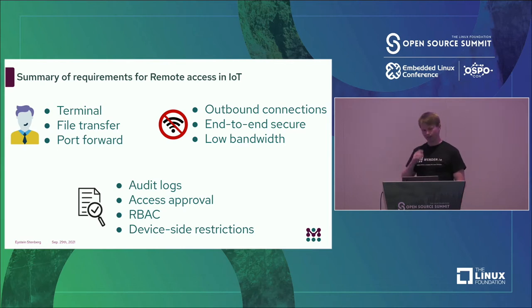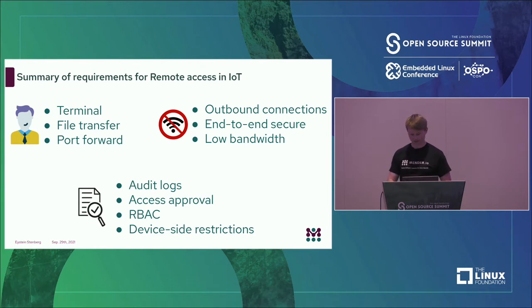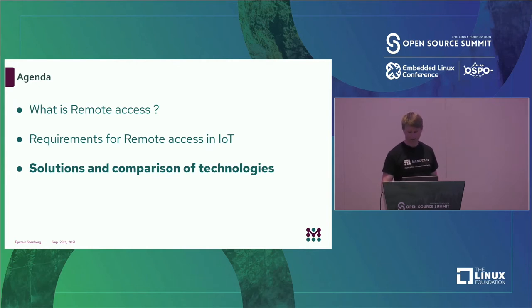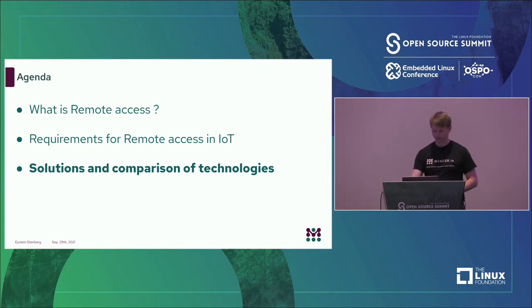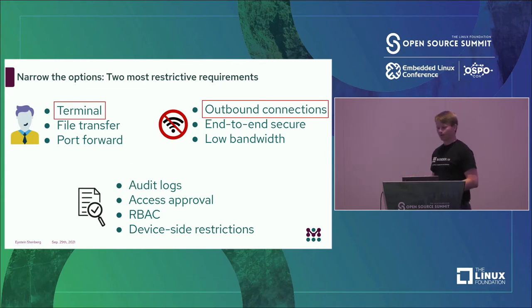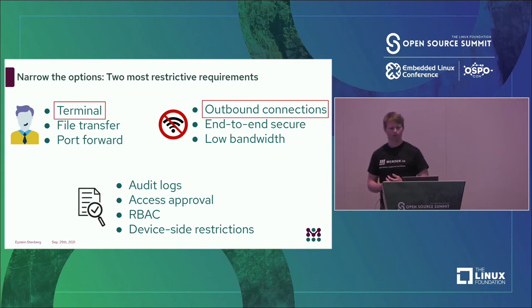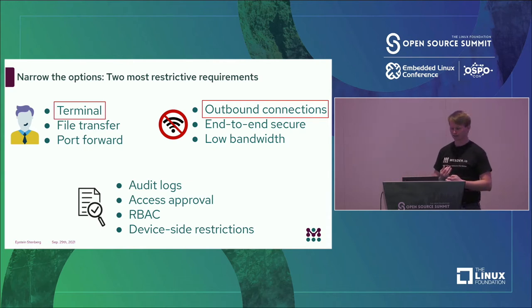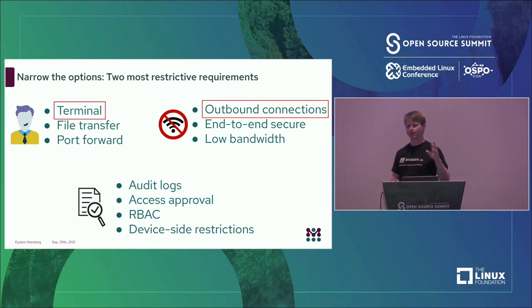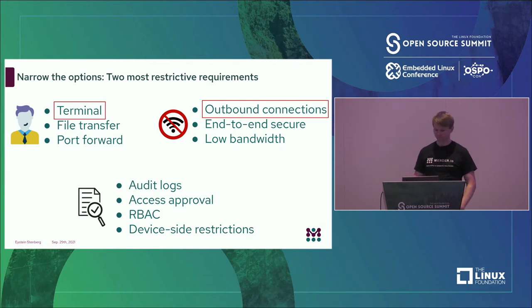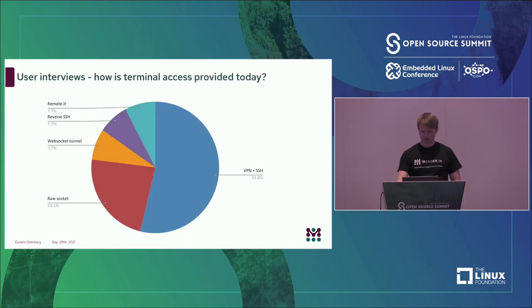So as usual, once you start looking a little bit deeper into a problem like remote access, it snowballs a little bit. The last part is: how can we actually address this? It's quite a lot, so we can start with the two most difficult things. If you want a terminal and you can only do outbound connections, how is that possible? Because once you've solved that, you can look at the other requirements and build on top of the initial solution.